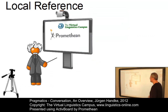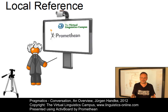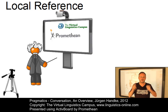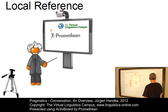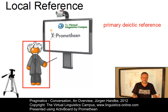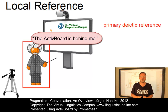Let's look at local reference next. There are several ways of defining the position of an object in space — this is referred to as local reference. I'm using the setup involved in my production of these e-lectures. This is my position. In front of me there's a camera and behind me there's the active board by Promethean. With the local reference type referred to as primary deictic reference, I would define everything from my point of view — I as a speaker am the reference point and the origin of the coordinate system. So I would say the active board is behind me.